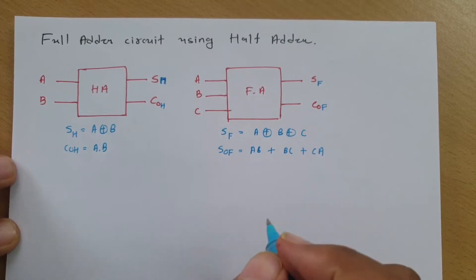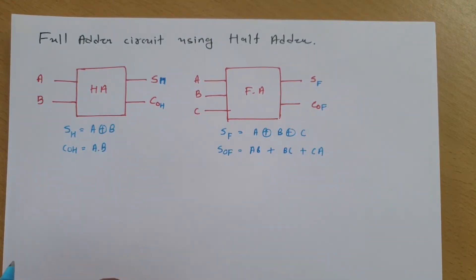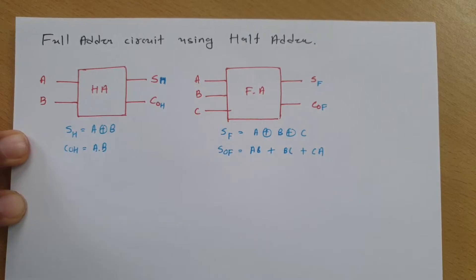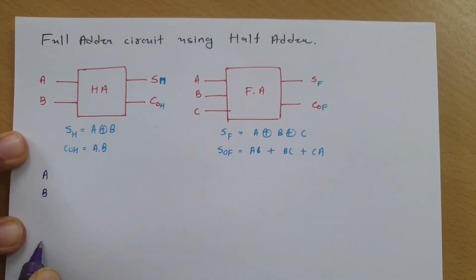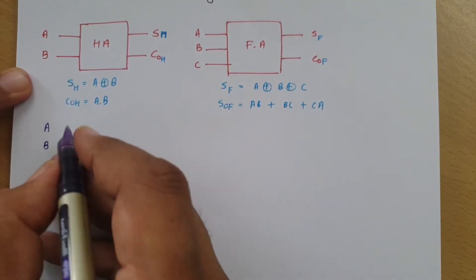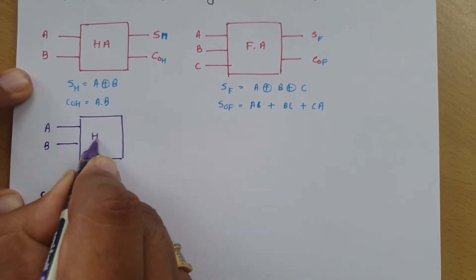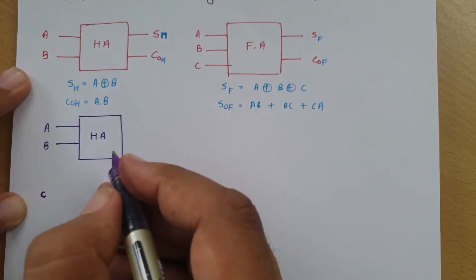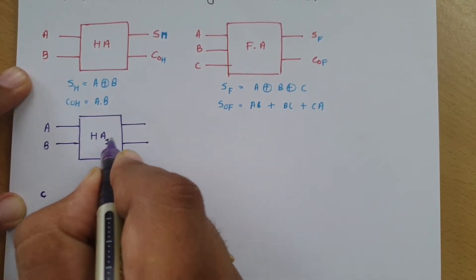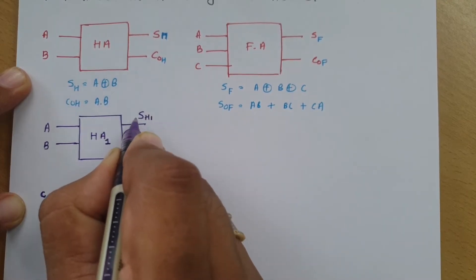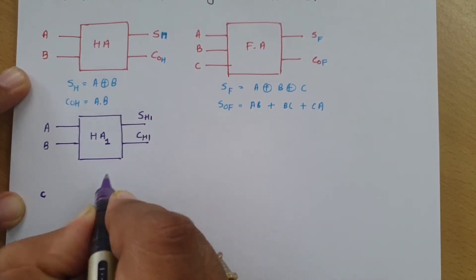Now in this video, we will be making the full adder circuit by using half adder circuits. Let us consider the first half adder. We have three inputs A, B, and C. We give A and B to the first half adder circuit. This is half adder 1, and its outputs will be: sum SH1, and carry CH1.